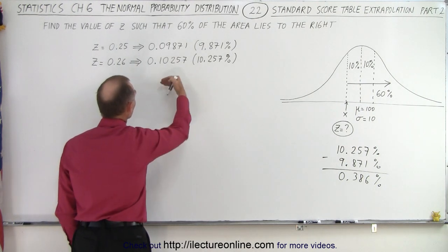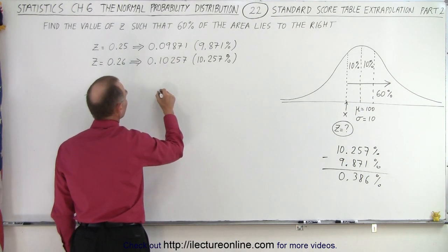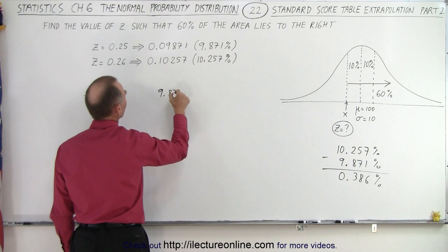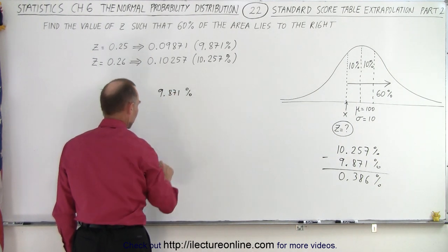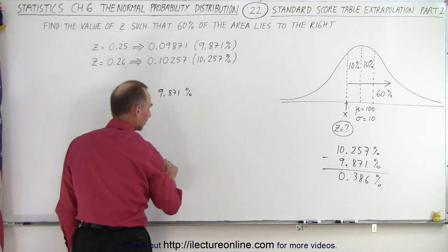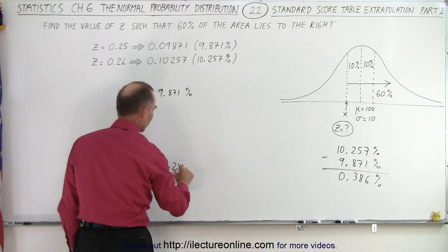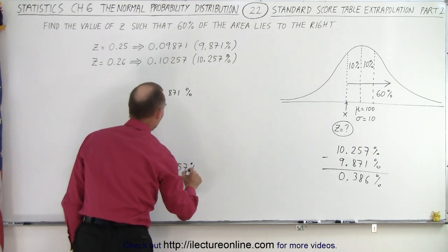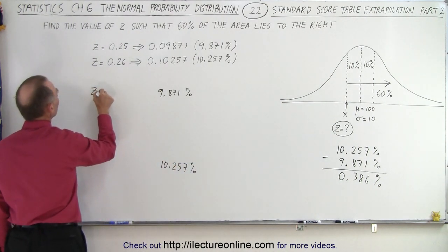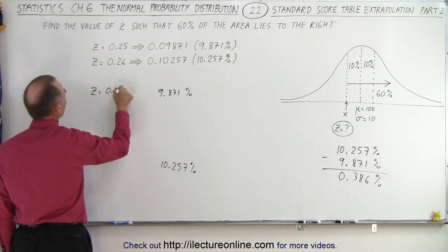So let's spread them out. So here we have 9.871%, and here we have 10.257%, and the z value here, z is equal to 0.25, and I'll add 0.